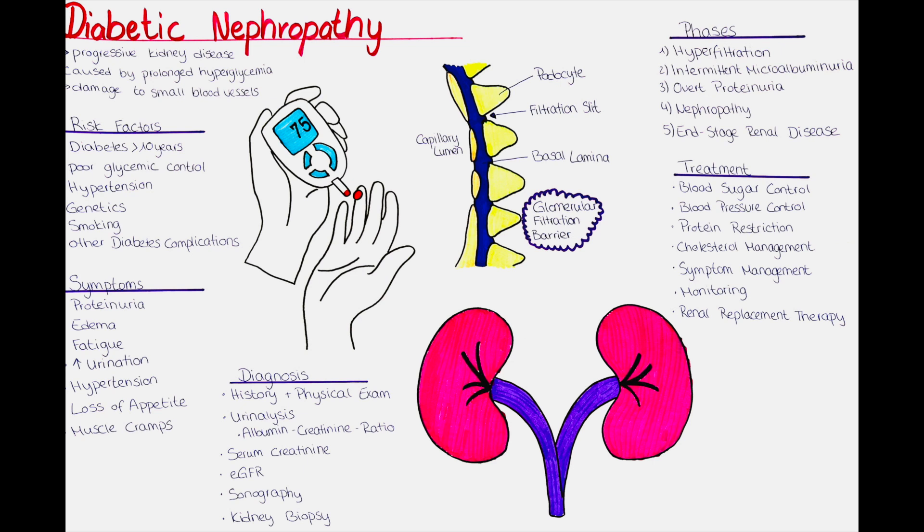Kidney dysfunction can lead to anemia, a condition characterized by a reduced number of red blood cells or a decrease in hemoglobin levels. Anemia can cause fatigue, weakness and a decreased ability to perform physical activities. Some individuals with diabetic nephropathy may also experience an increase in urination, so polyuria, or have to wake up frequently during the night to urinate, called nocturia.